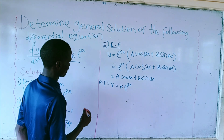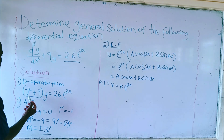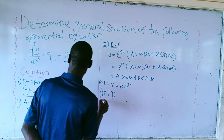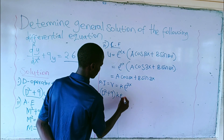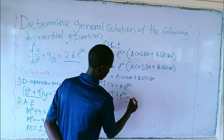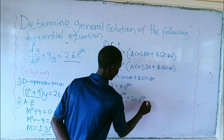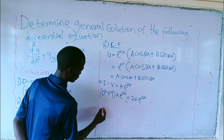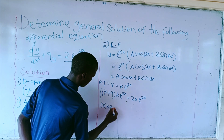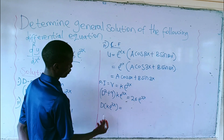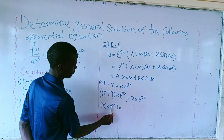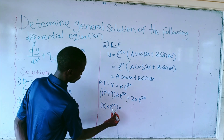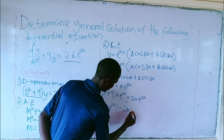After writing this, the next step, we're going to use it to solve. We go back to the operator form: d squared plus 9, and instead of putting y, we'll put k exponential 2x, which will give you 26 exponential 2x. We're going to find the derivative of k exponential 2x. The derivative of the power of e to the 2x with respect to x gives 2, so it's going to be 2k exponential 2x.